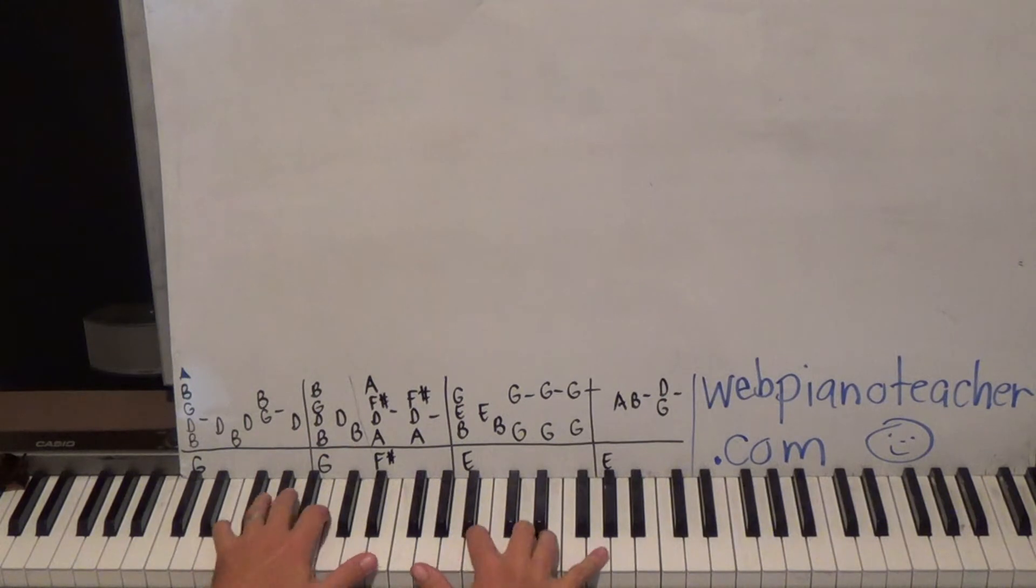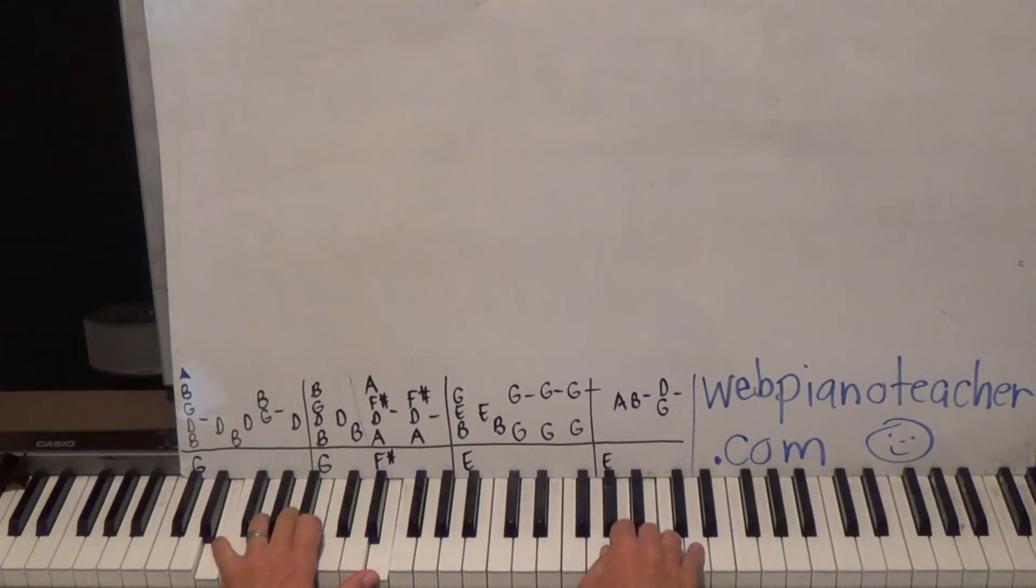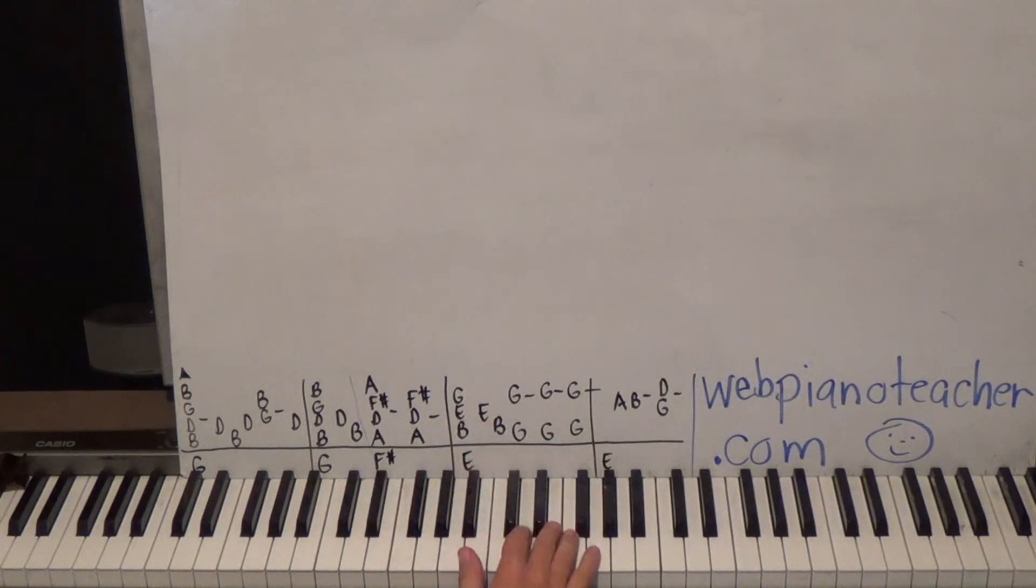Now we're going to go to E minor. That's going to be B E G on the right hand. I'm going to use one three five. Then I'm going to play the E again and then the B. And then I'm going to play a G octave three times. Those of you who are able let's put an E in between.